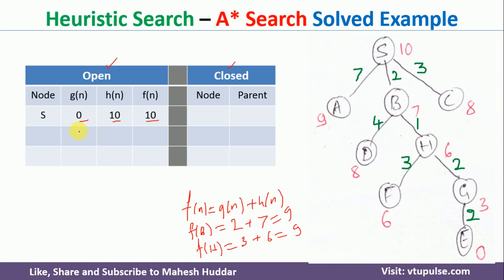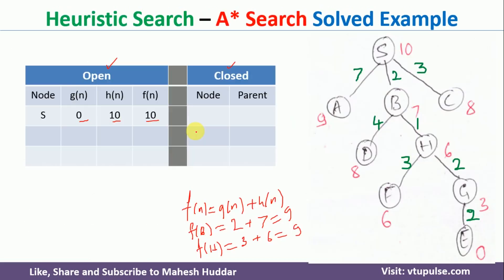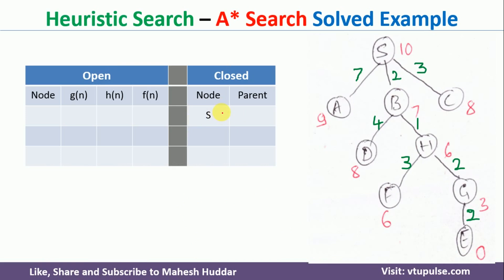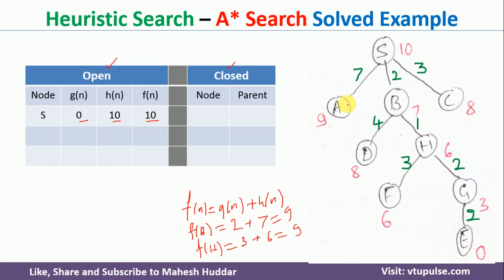We check whether the best node is the goal node. S is not the goal — the goal is E — so we go to the otherwise branch. Because it is not the goal, we get the successors of the best node. For each successor, we point back to the best node so we can trace the path later. For S, there is no parent written.